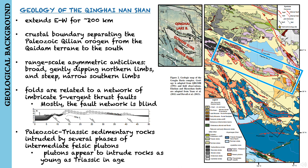The range is cored by Paleozoic-Triassic sedimentary rocks which are intruded by several phases of intermediate to felsic plutons. The plutons in the central Qinghai-Nanshan appear to intrude rocks as young as Triassic in age.